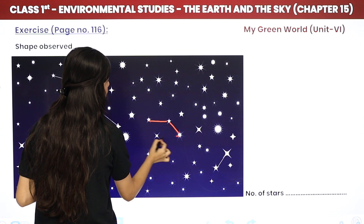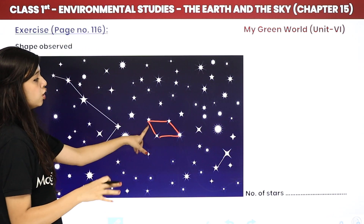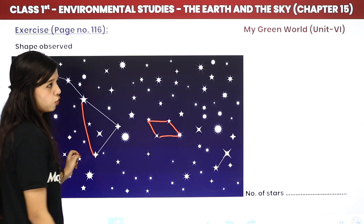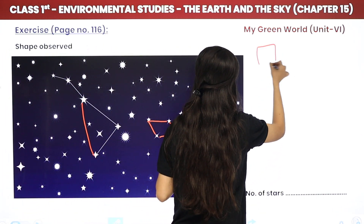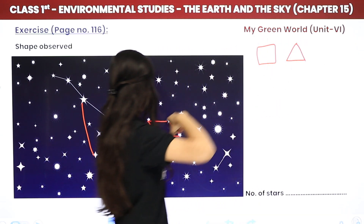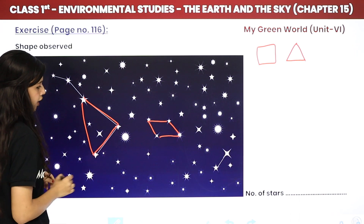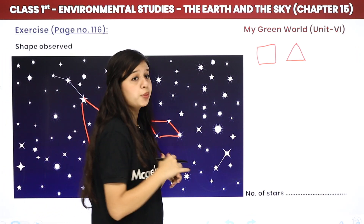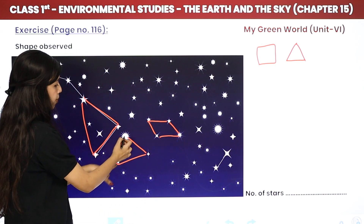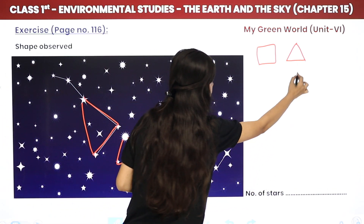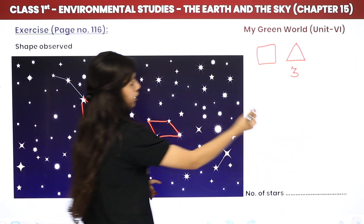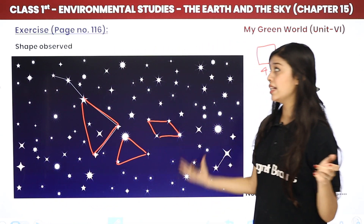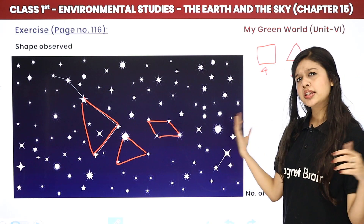Kya hum yahan pe koi shape bana sakte hain stars se? Dekho — agar one, two, three, four ko main connect kar dun toh yeh kya ho jayega? Yeh ban jayega SQUARE. Aur aise yeh one, two, three ko connect karun toh yeh ban jayega TRIANGLE. To meri shapes ban rahi hain — square ban gaya, triangle ban gaya. Aisi aapko bhi shapes draw karke dekhni hain. Triangle mein kitne stars lage? 1, 2, 3 — teen. Square mein 1, 2, 3, 4 — chaar stars. Aap bhi shapes banao aur count karo ki kitne stars lag rahe hain. Yeh bohot simple activity hai.